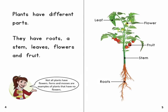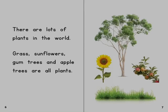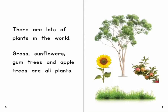Not all plants have flowers. Ferns and mosses are examples of plants that have no flowers. There are lots of plants in the world. Grass, sunflowers, gum trees and apple trees are all plants.